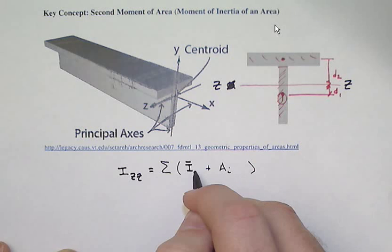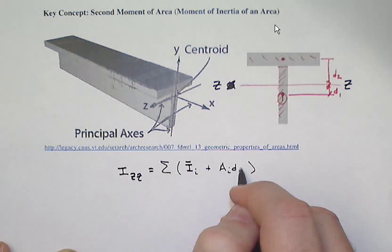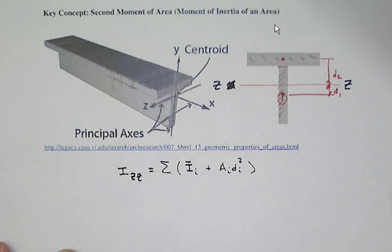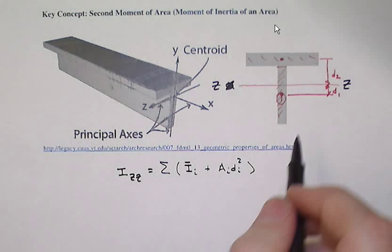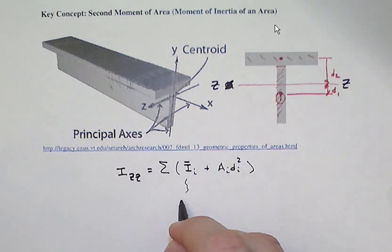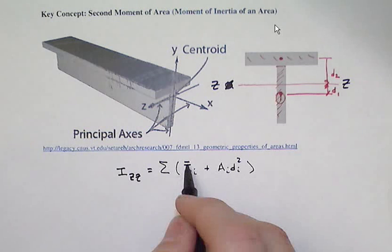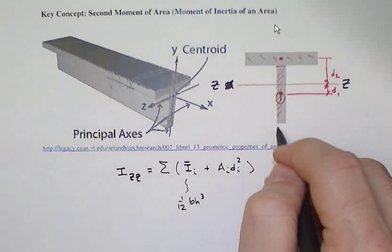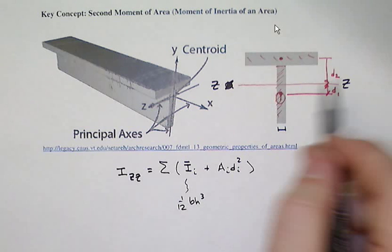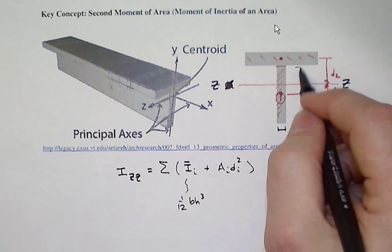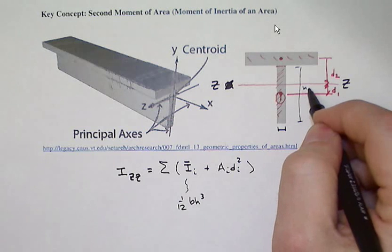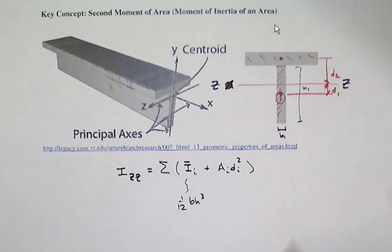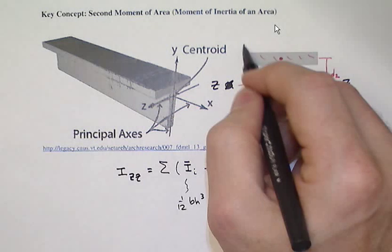For the rectangle, that I-bar is (1/12) base times the height cubed, where by definition the base is parallel to the axis of interest and the height is perpendicular. So there would be h1 and b1, and on the other one there would be my b2 and my h2.